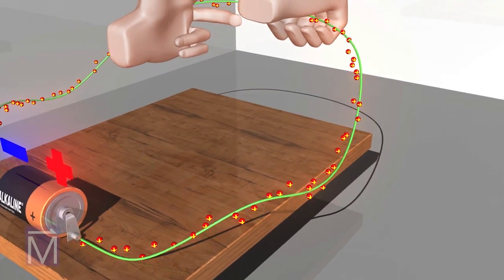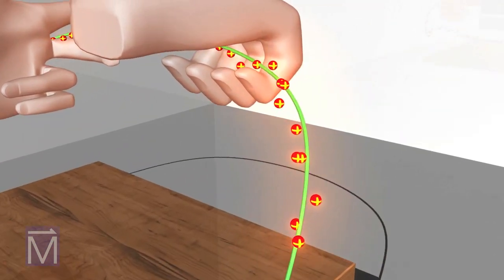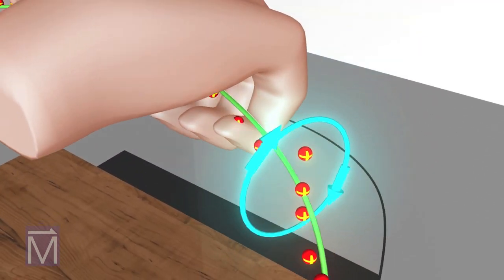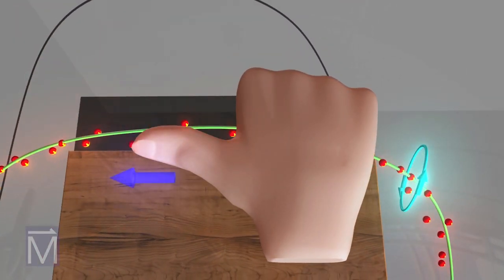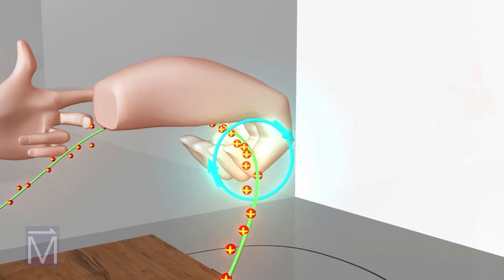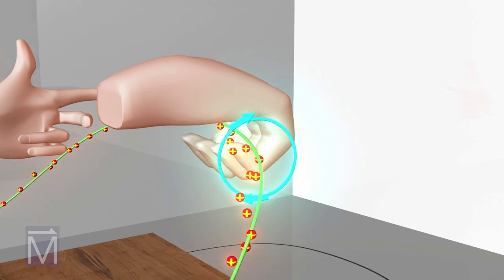When current flows through a wire, it generates a small magnetic field around the wire as shown by these blue lines. If you hold your right hand like so, with your thumb pointing in the direction of the electric current, then the curl of your fingers will show the direction of the magnetic field. This is known as the right hand rule.